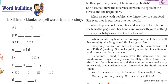Before doing this activity, let us read the story. 'Mother, your baby is silly. She is so very childish. She does not know the difference between the lights in the streets and the bright stars. When we play with pebbles, she thinks they are real food. She even tries to put them into her mouth. When I open a book before her and ask her to learn her ABC, she tears the pages with her hands and rolls with joy at nothing. This is your baby's way of doing her lessons. When I shake my head at her in anger and scold her or call her naughty, she laughs and thinks it's great fun.'